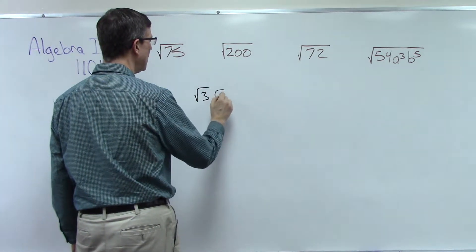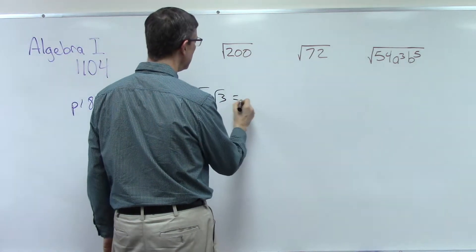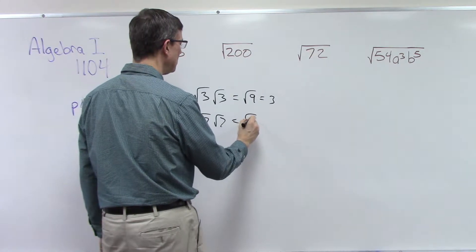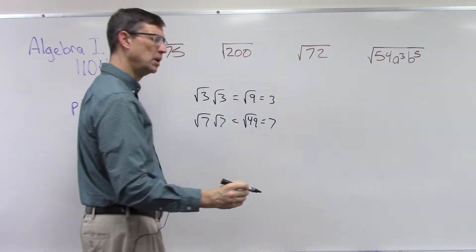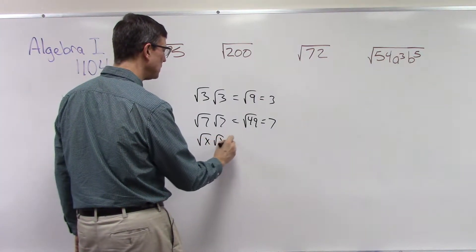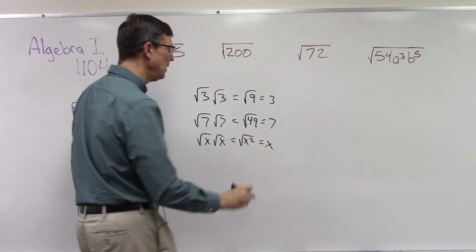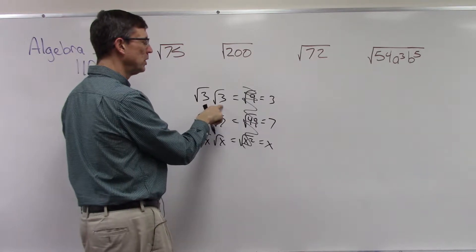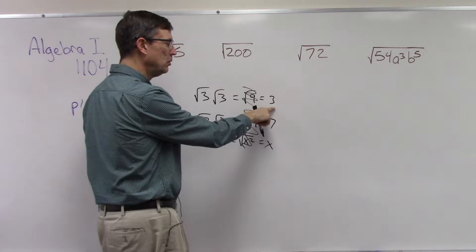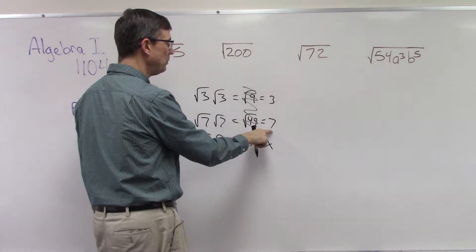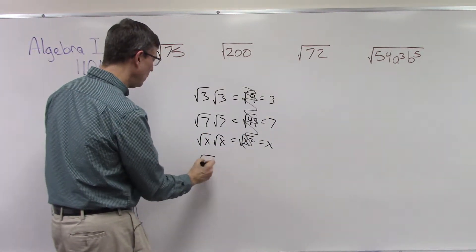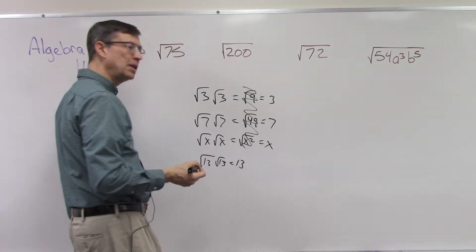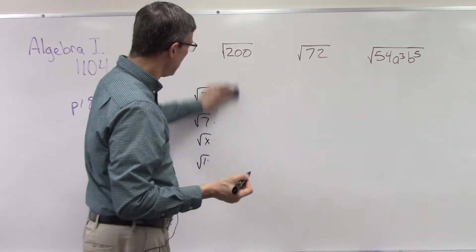What is the square root of 3 times the square root of 3? That's the square root of 9, which is 3. What's the square root of 7 times the square root of 7? Well, 7 times 7 is 49 and the square root of 49 is 7. What's the square root of x times the square root of x? That's the square root of x squared, which is x. Do you see a pattern? Square root of 3 times square root of 3 — the 3 pops out. Square root of 7 times square root of 7 — the 7 pops out. So square root of 13 times square root of 13 immediately gives 13.